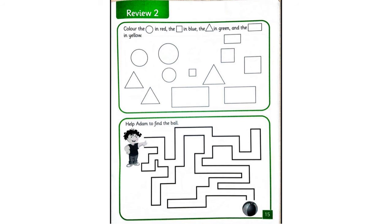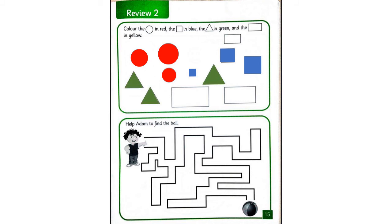Okay, KG1. In page 15, we are going to color the circles in red. Let's count them. How many circles? One, two, three. Next, the squares in blue. Let's count the squares. One, two, three. The triangles in green. How many triangles? One, two, three. The rectangles in yellow. One, two, three. Great job.